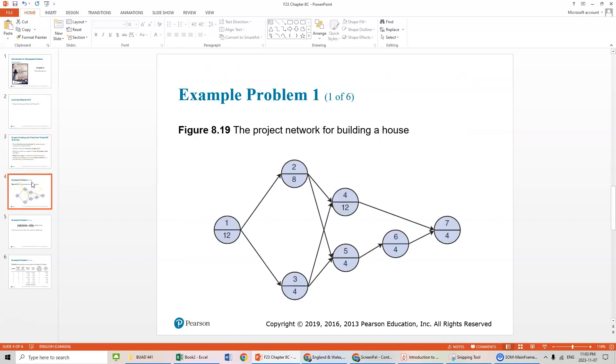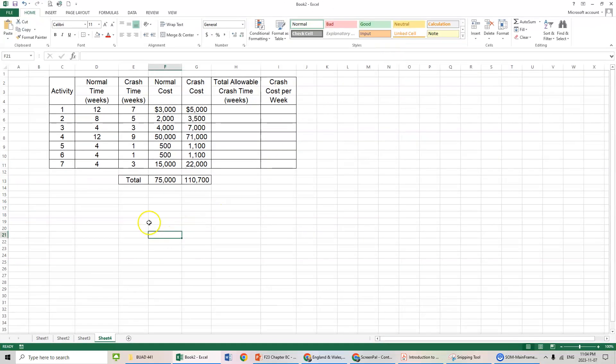So we go back to our example of building a house. We have those seven activities from our first video, first section within this chapter. There's various activities and times. The time element when we first did this was in months. We're changing this to weeks just to make it a little more easily understood. Here is our normal time. Activity 1 before was 4 months, now it's 12 weeks. Activity 2, 8 weeks, 2 months, and so forth. We have the total normal cost of each activity in regards to the normal time. So our project is going to cost us $75,000 if we use the normal time.